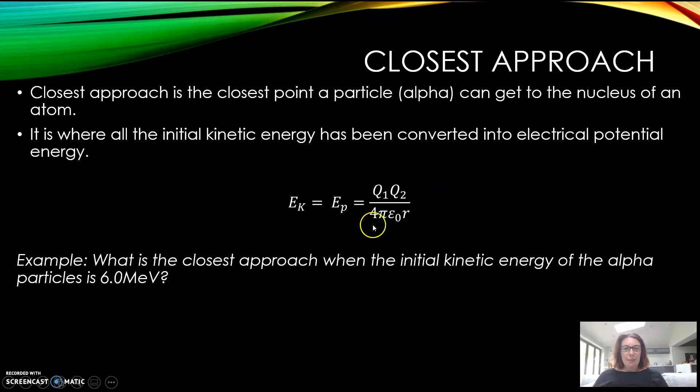At the point just where the alpha particle stops, all of its initial kinetic energy has been converted into potential energy and it will then go back again. You can calculate how much energy that is using this equation. q1 is charge on particle one - that would be the alpha particle, which has two protons.